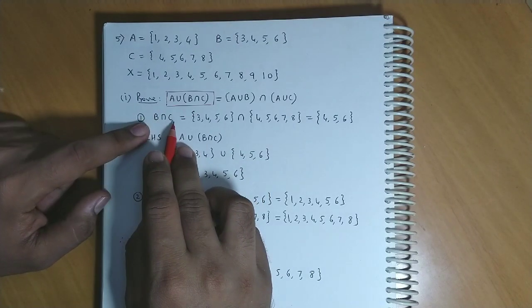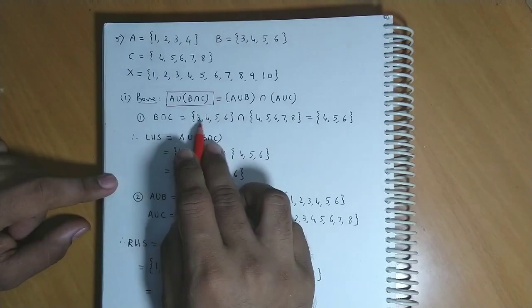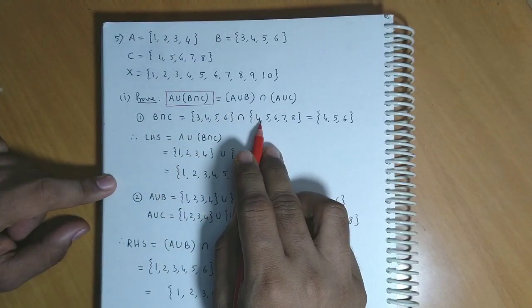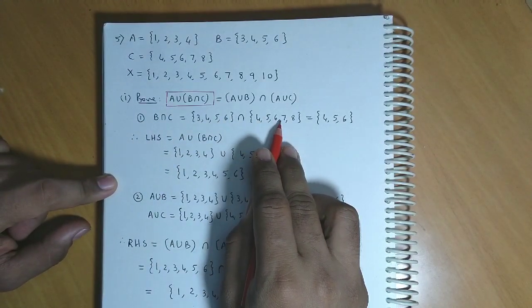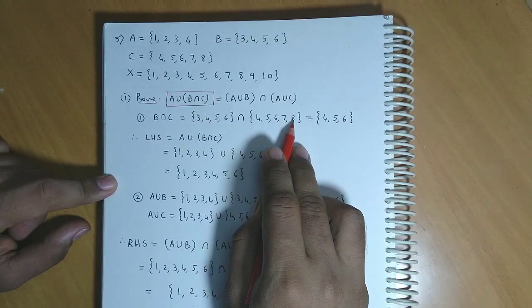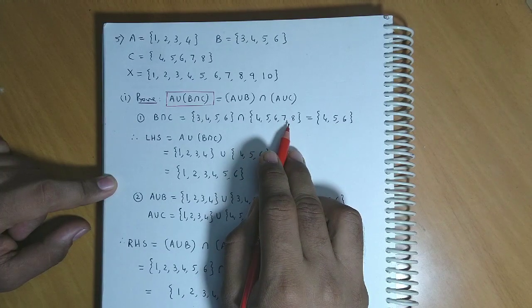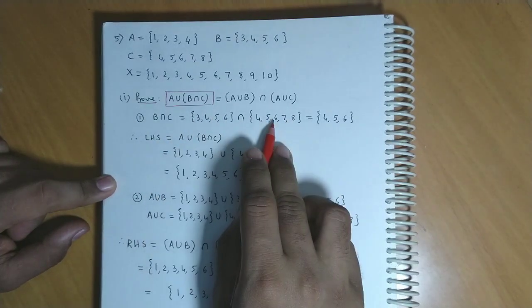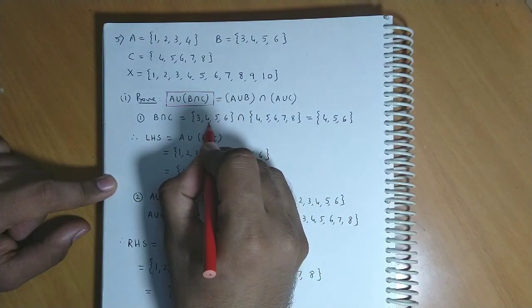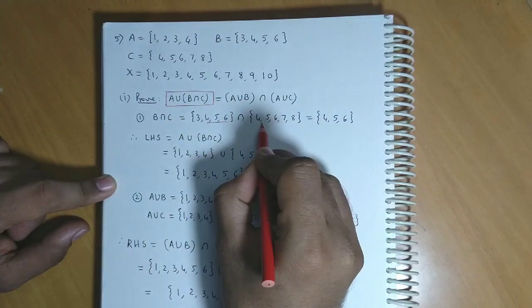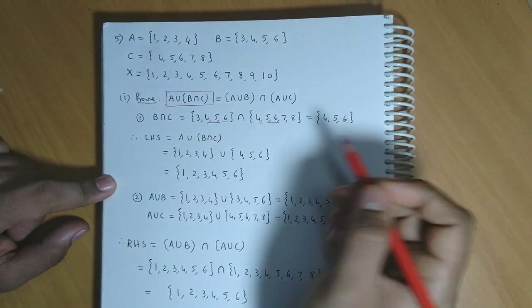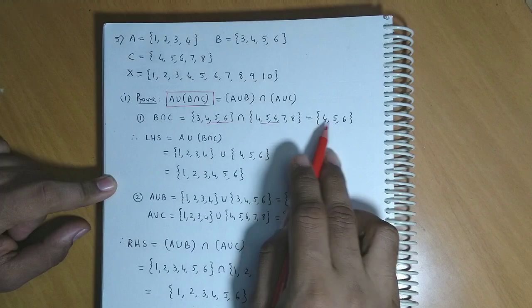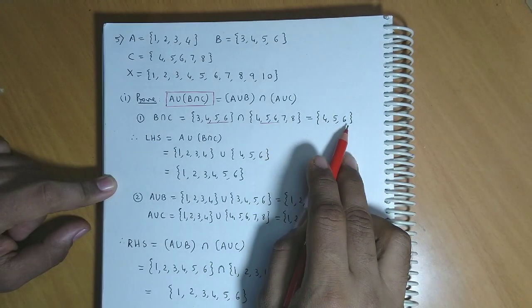So B intersection C hoga intersection of {3, 4, 5, 6} and {4, 5, 6, 7, 8}. Ab intersection mein hame common elements likhte hai. Toh yeh doonoh set mein jo common elements hai voh hai 4, 5, 6. So B intersection C hoga {4, 5, 6}.